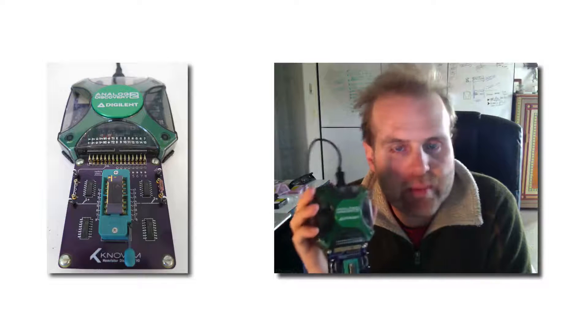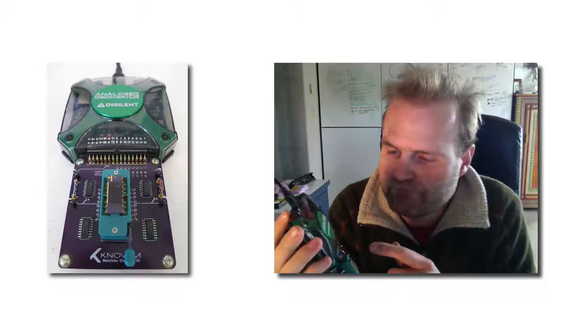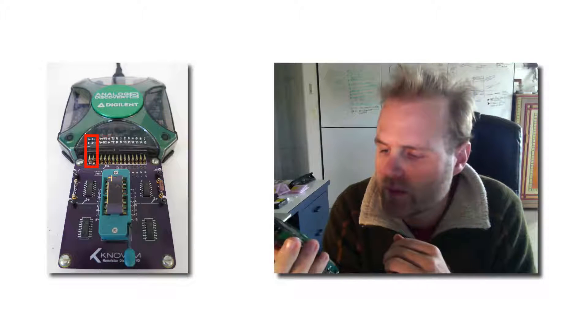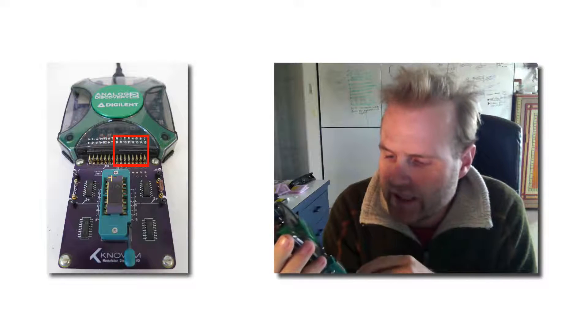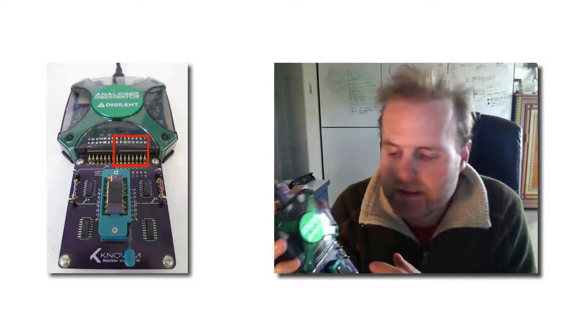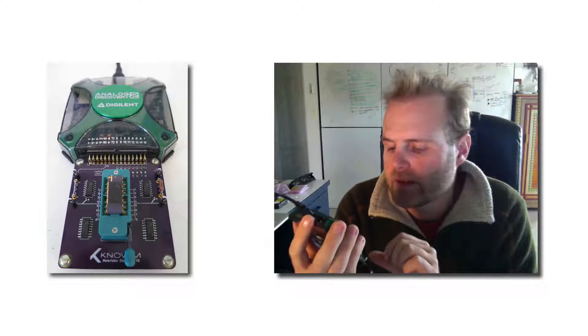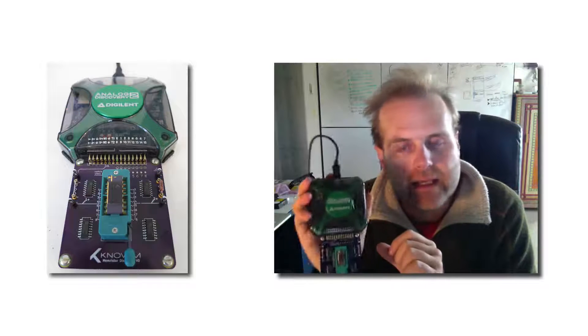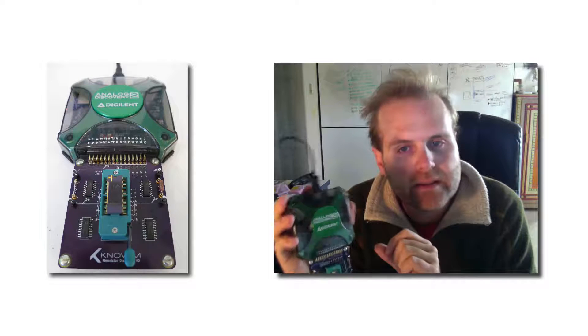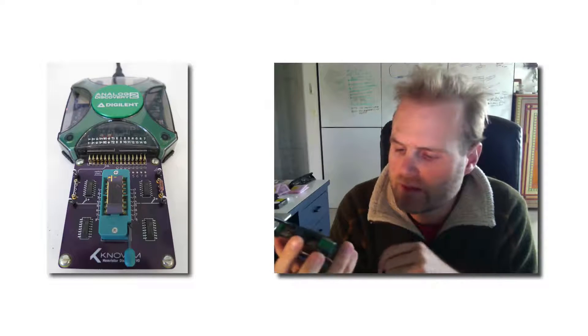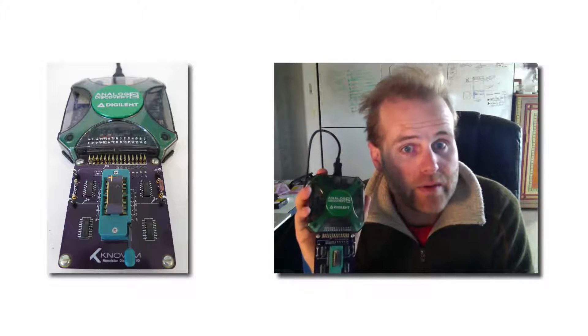So the board is pretty simple. It really just couples to the Analog Discovery's waveform generators and oscilloscopes. We use the digital I/O to select Memristors via these analog switches. And we have a little series resistor here set to 5k ohms to limit the current and prevent us from creating the magic smoke, which you definitely don't want to do when you're paying $200 a chip for these Memristors.